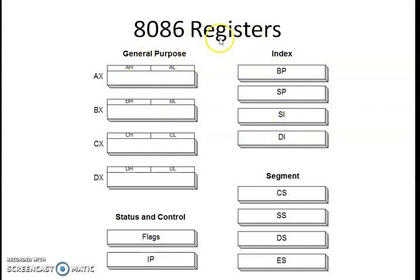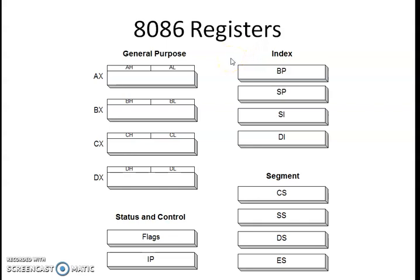We will discuss 8086 registers in detail in today's session. The 8086 microprocessor consists of 14 registers for processing. Whenever you want to execute your program you can make use of these registers. They are categorized in four different ways.